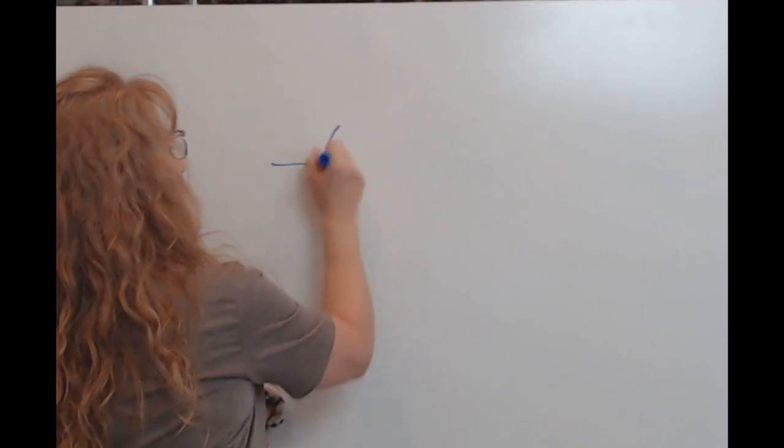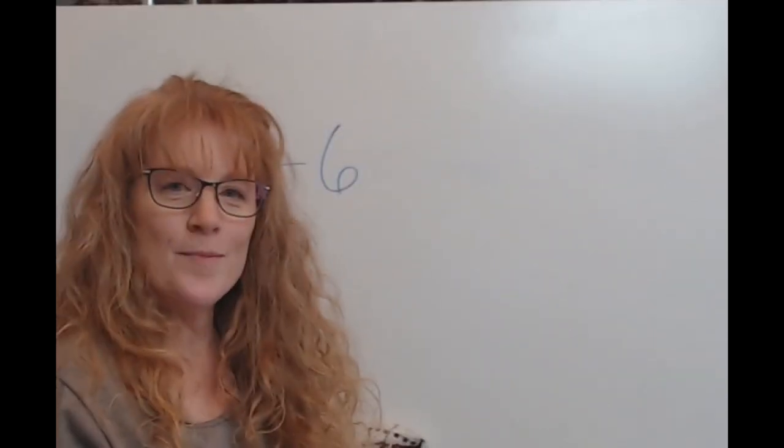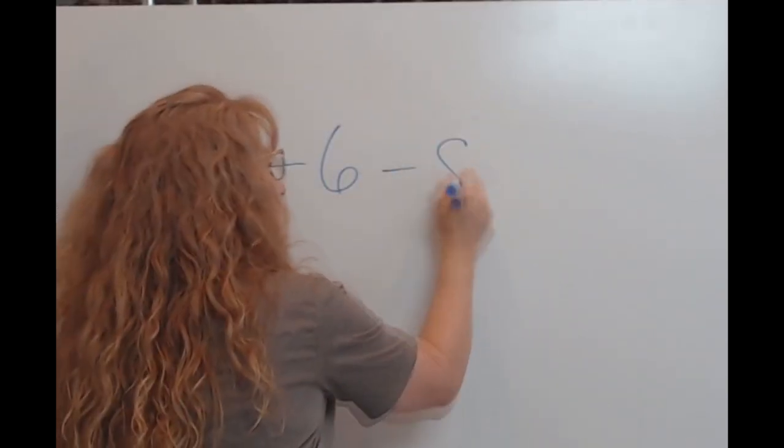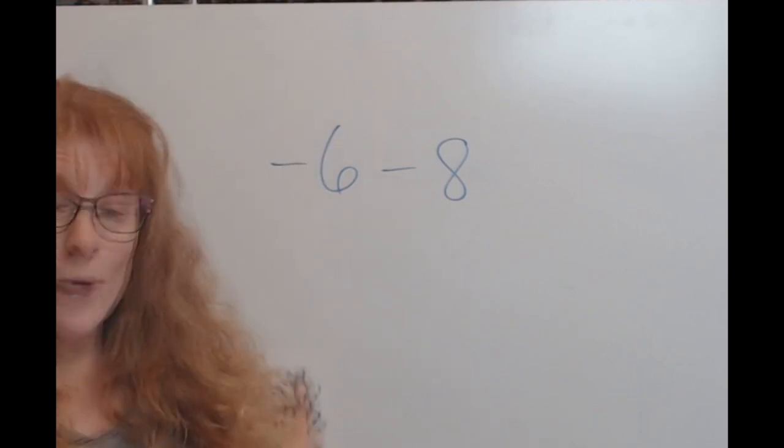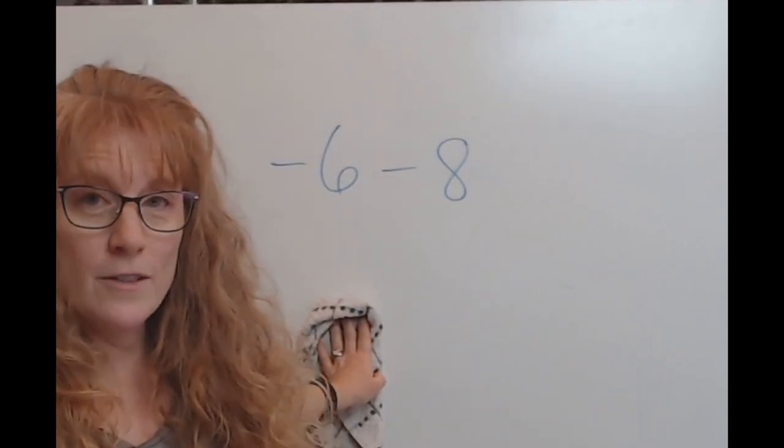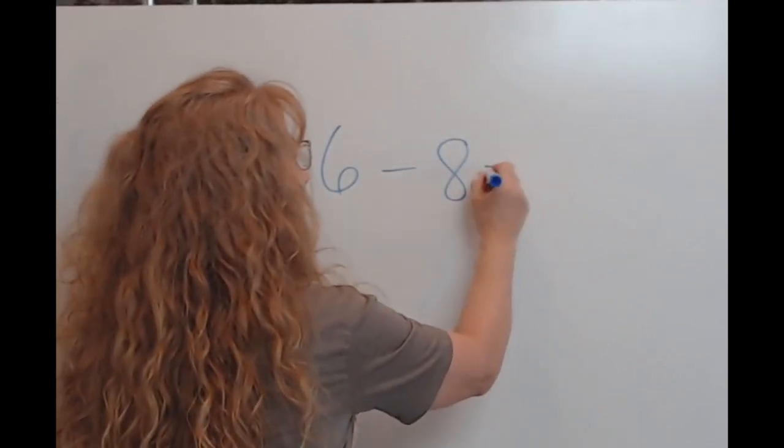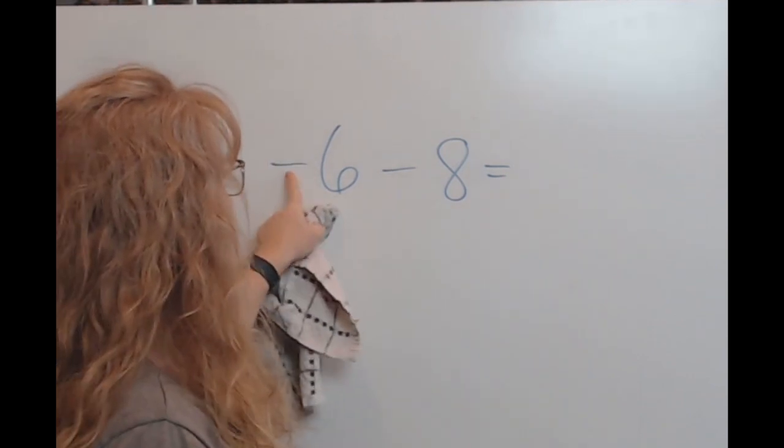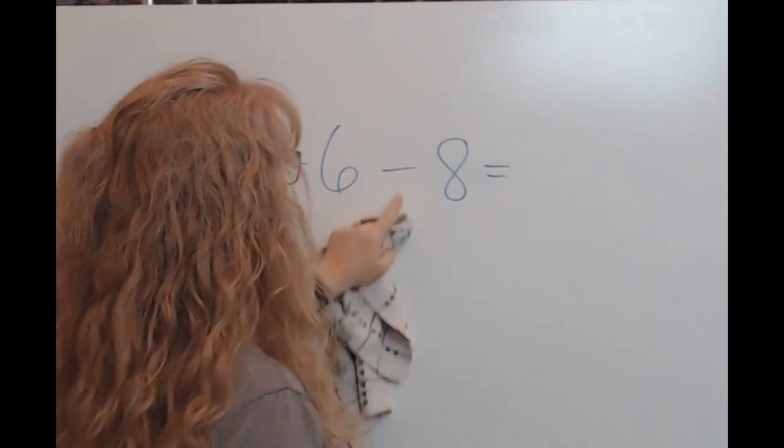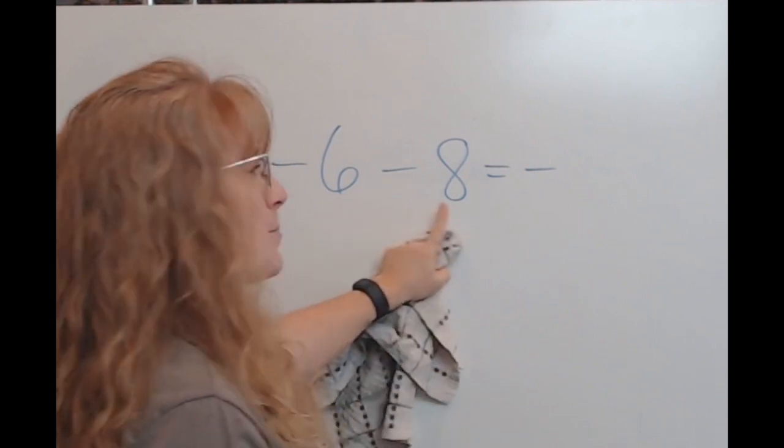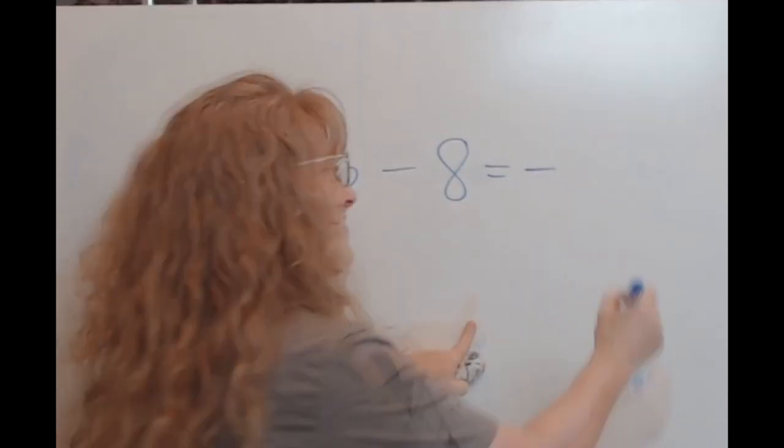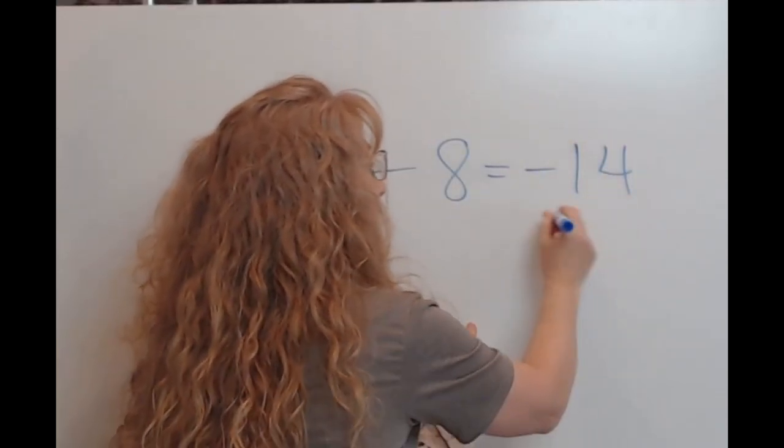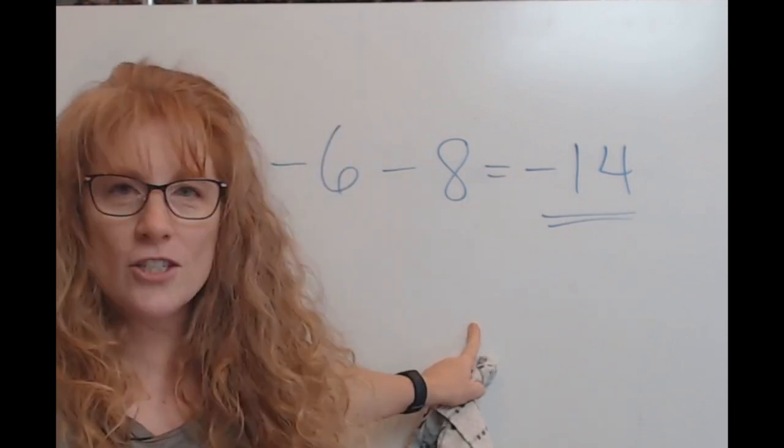Okay, what if you already are down six dollars and you spend eight more? Do you have money or are you really in trouble? You're really in trouble. So anytime there are minuses here, you just put the minus here, and then what's six plus eight? Fourteen, that's right. So now you better get a paper route or start doing the dishes and washing cars.